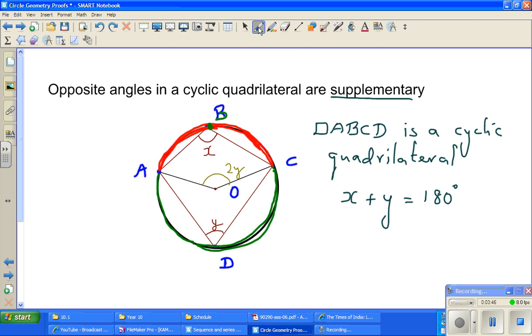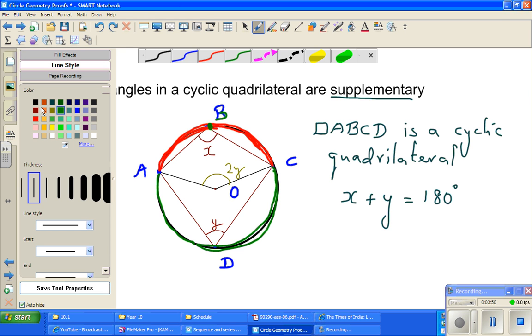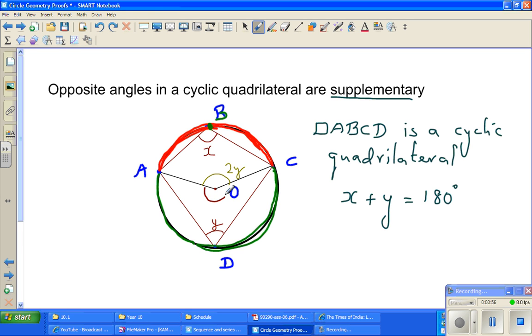So if this angle is X, I'll use a different color. If this is X, can I say this would be 2X? The same principle.